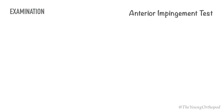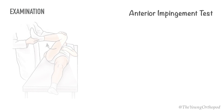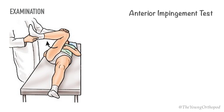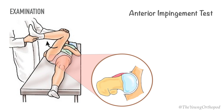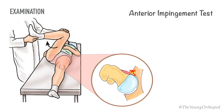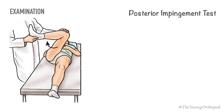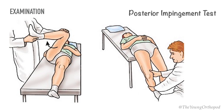In the anterior impingement test, the affected hip is flexed to 90 degrees and the leg is internally rotated and adducted. If there is abnormal contact between the anterior superior acetabular rim and the femoral neck, pain may be elicited. The posterior impingement test is performed by having the patient dangle their legs off the end of an examination table with the affected leg externally rotated and the opposite limb held flexed. In a positive exam, the femur contacts the posterior acetabular rim, eliciting pain.